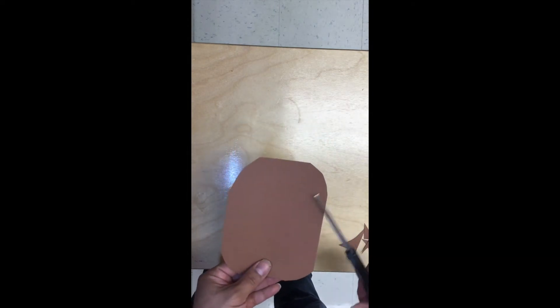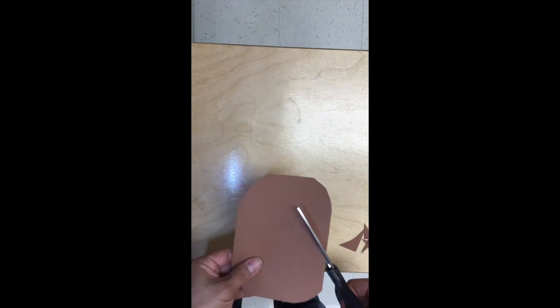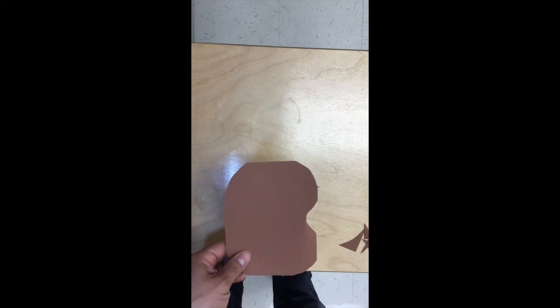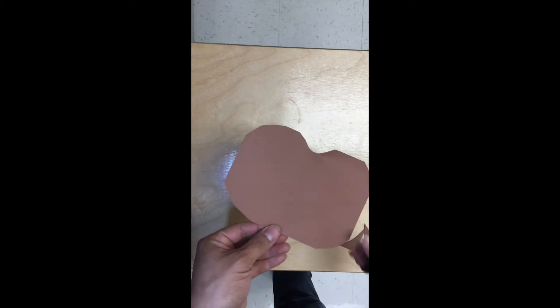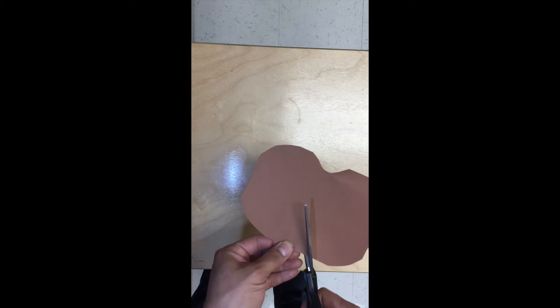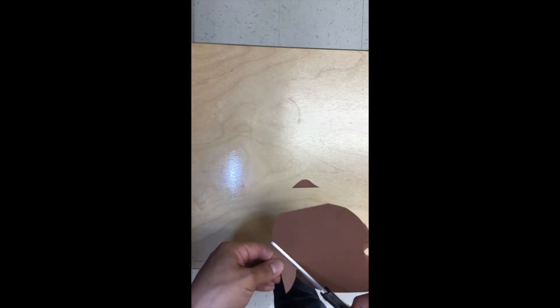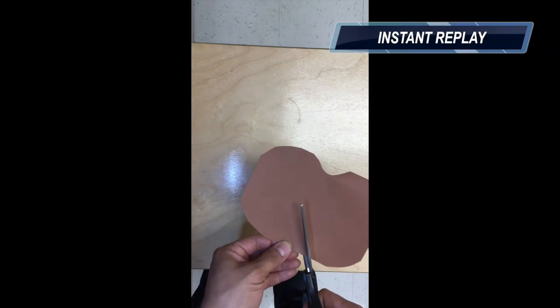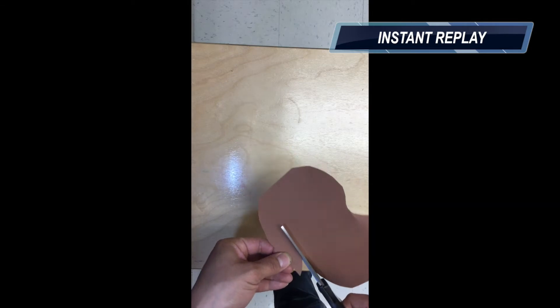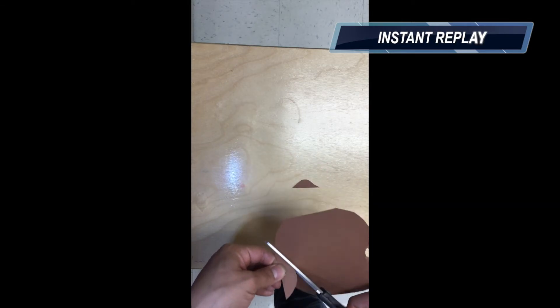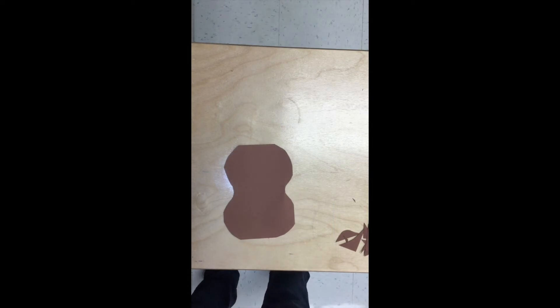Now for the curvy sides, we will cut two semi-circles on the sides of the body. Cut in, cut around, and off. Let's look at that again. Cut in, cut out, nice and slowly and cut all the way off.